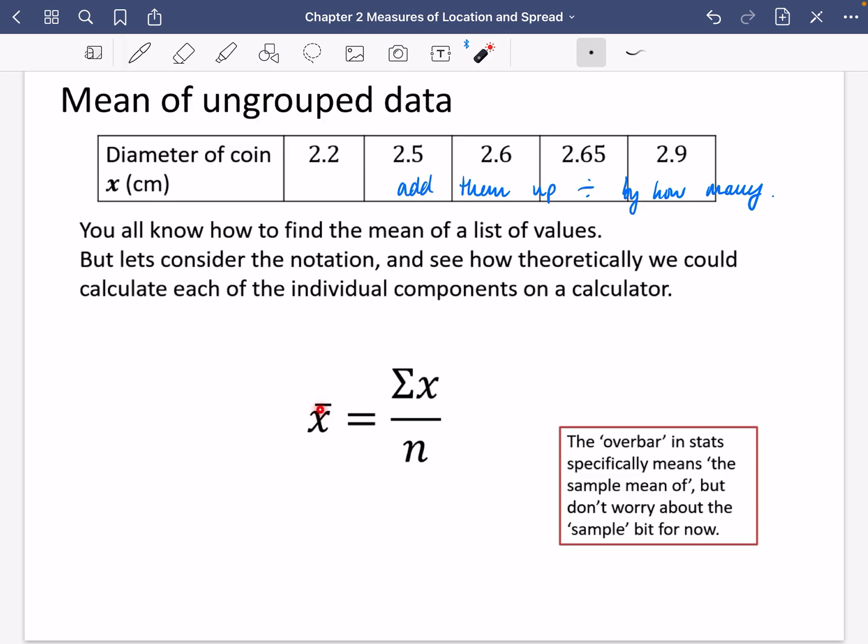I've written here that the overbar in stats, this bit here, specifically means the sample mean of. But don't worry about the sample bit for now. It just means the mean of these values, the diameter of the coin in this particular case.